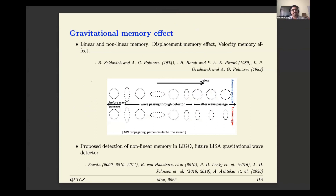The motivation begins with the gravitational memory effect. If you have a configuration of test particles or inertial particles far from a source, and a gravitational wave passes perpendicularly through them, the configuration changes shape. But after the wave has passed, it is not necessary for the configuration to return to the same initial state — it may retain some memory in terms of changed distances, as shown in the bottom picture. There are different types of memory effect: the linear memory, displacement version, velocity version, and others.